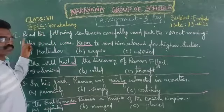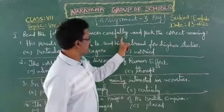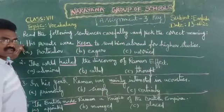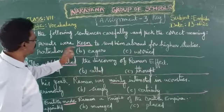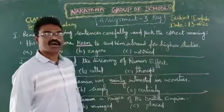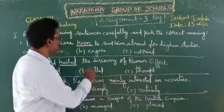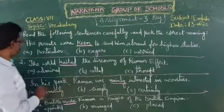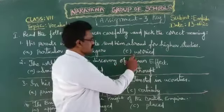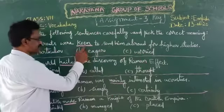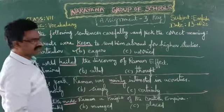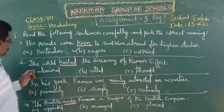Now let us see row number 1: Read the following sentences carefully and pick the correct meaning. Question number 1: His parents were keen to send him abroad for higher studies. The word 'keen' is underlined. Three options are given — Option A: particular, Option B: eager, Option C: worried. The meaning of 'keen' is eager, so Option B is the correct answer.